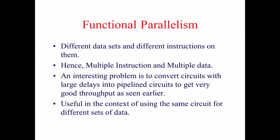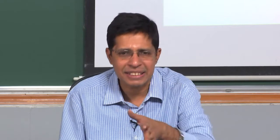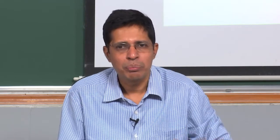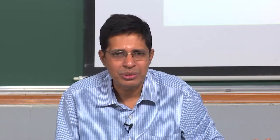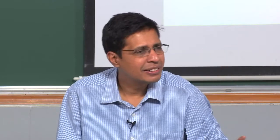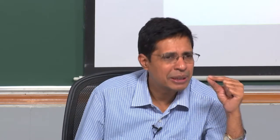Pipelining is an example of what we call functional parallelism. Different data sets — meaning different instructions — are acted on by different parts of the circuit. Each part of the circuit represents an instruction working on data. Part 1 is one instruction, Part 2 is another. When Part 1 works on D1, Part 2 works on D2, and vice versa. This makes a pipeline an example of a multiple instruction, multiple data environment.